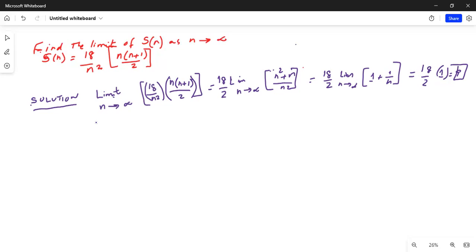The solution to the problem: limit N tends to infinity, in parenthesis, 18 over N square in parenthesis, and then in parenthesis N times N plus 1 by 2, is equal to 9.